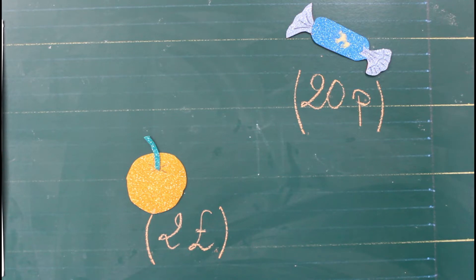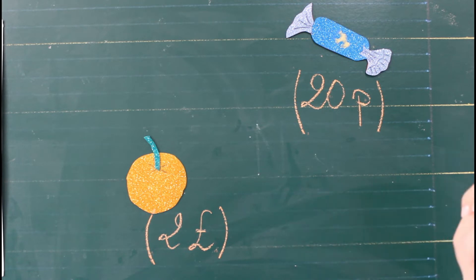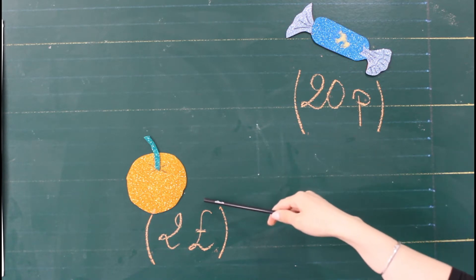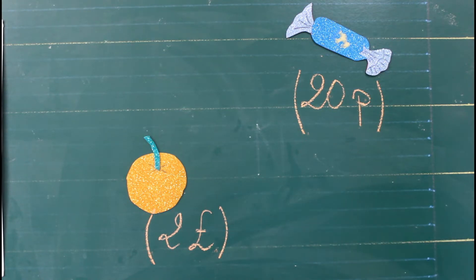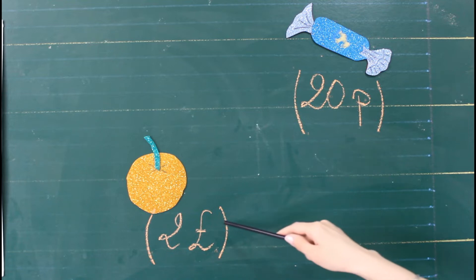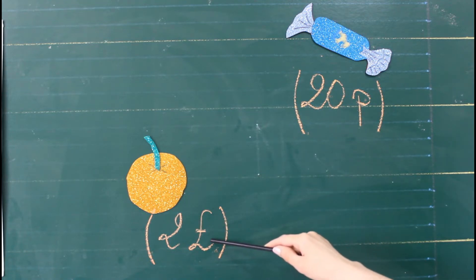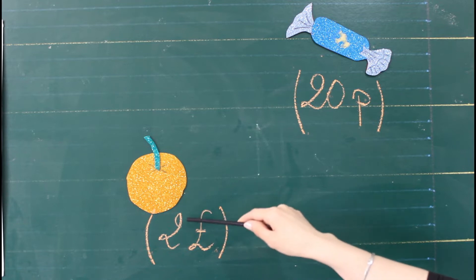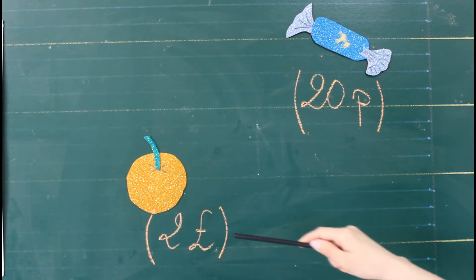We are in the supermarket now. Excuse me. Can I buy one orange? Yes, you can. How much does it cost? It costs two pence.